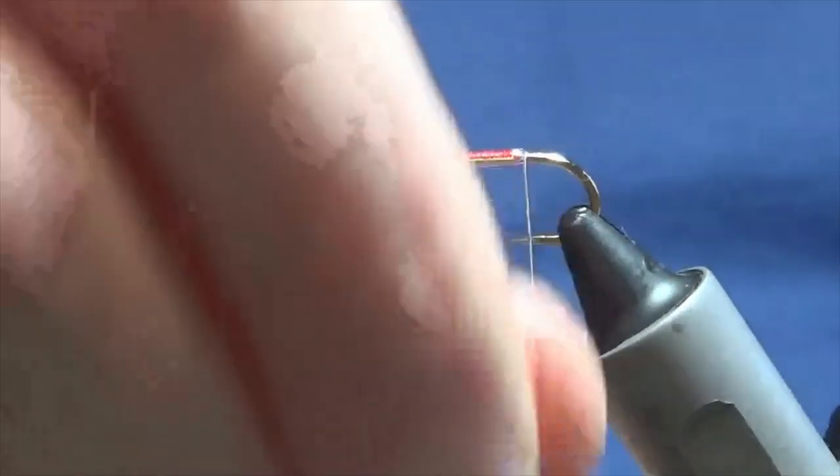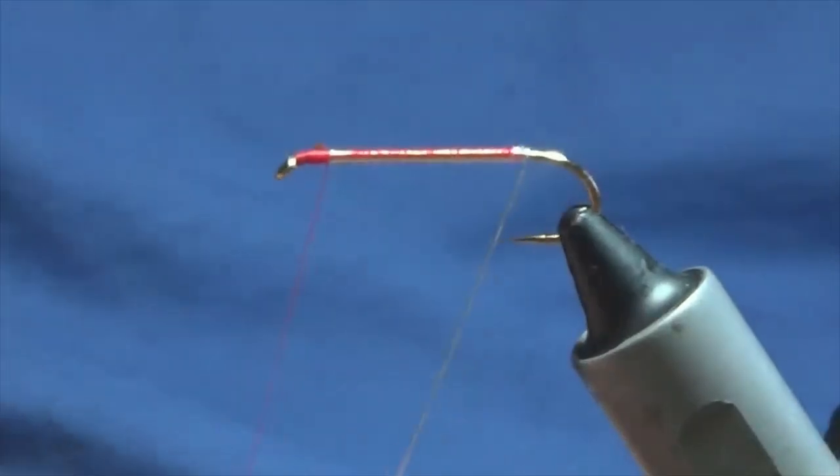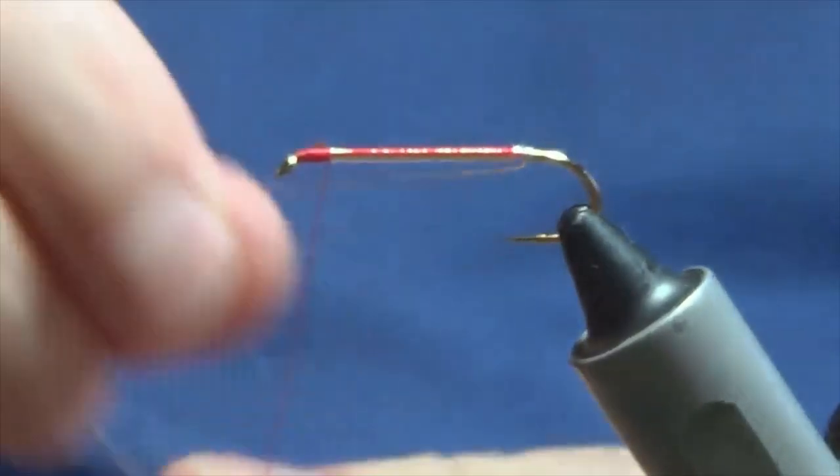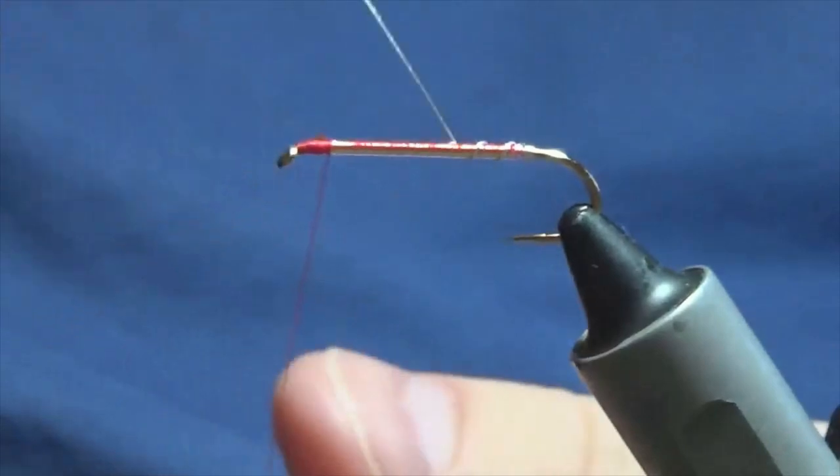Then you can come up with your wire. I'm going to get a couple of turns going at the back first, and then just rib the body.